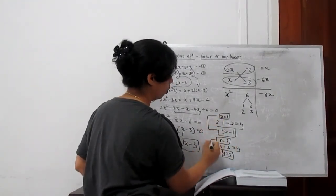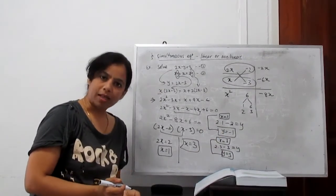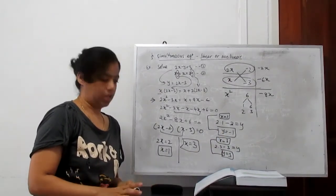So there are two values. When x is 1, y is minus 1. When x is 3, y is 3. Clear?